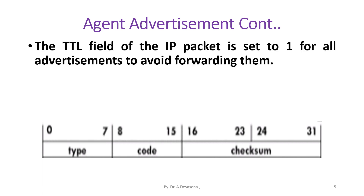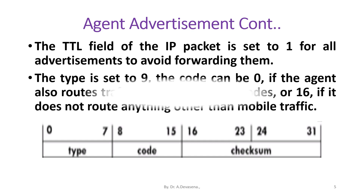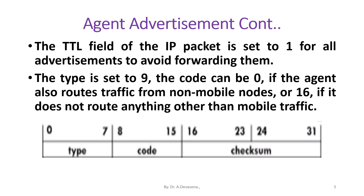The TTL field of the IP packet is set to one for all advertisements to avoid forwarding them. The type is set to nine. The code can be zero if the agent also routes traffic from non-mobile nodes, or 16 if it does not route anything other than mobile traffic.